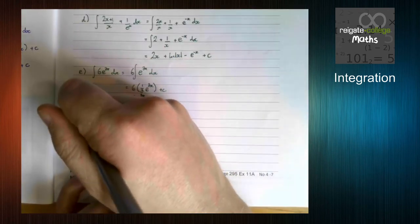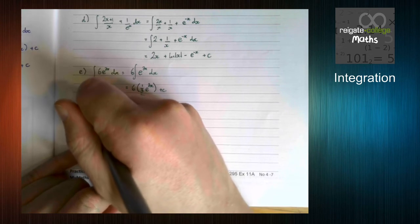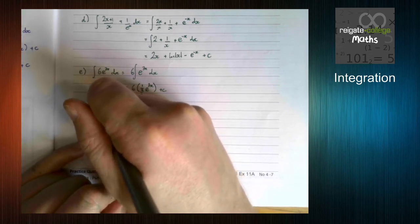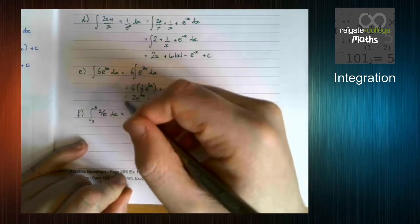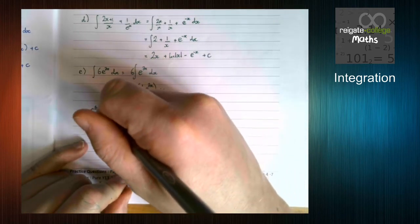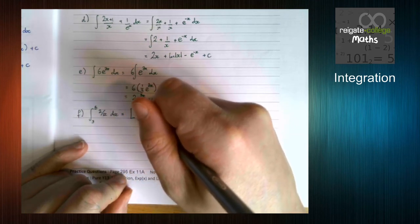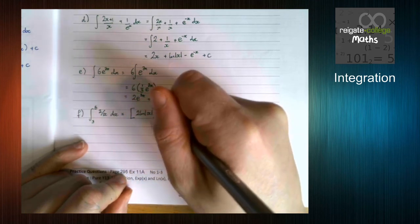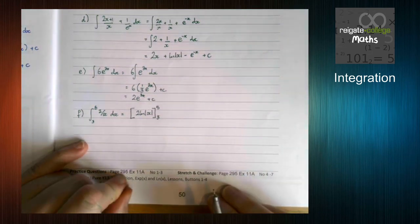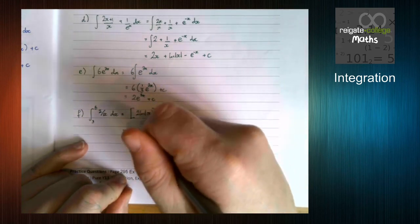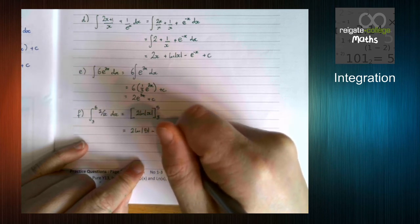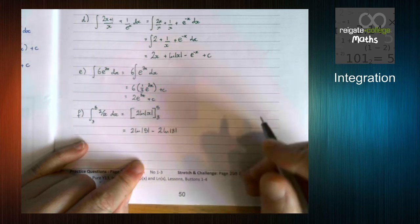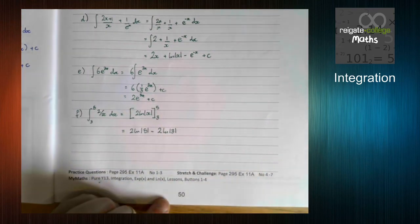So f, we are finding the integral between 3 and 5 of 2 over x dx. Now, from our rule, we've seen that 2 over x is going to integrate to 2 ln modulus x. And we're integrating that between 5 and 3. Normally, we just substitute things in, and this is no different. It doesn't matter that it's ln, it's just always the way.